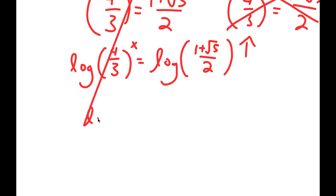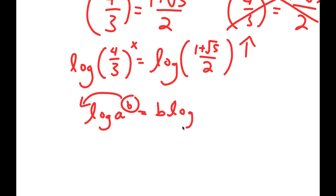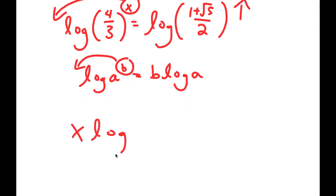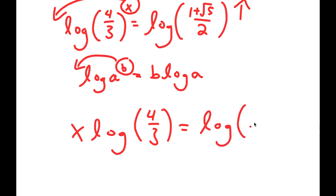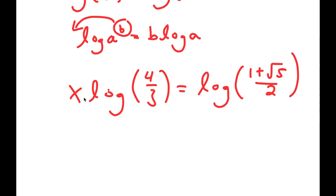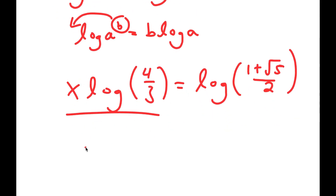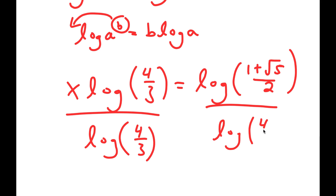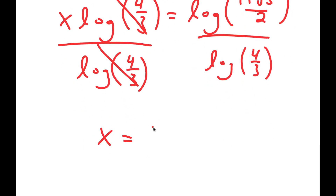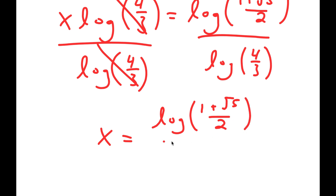Now if I have something in the form log of a to the power of b, I can move the exponent b to the front, so it equals b times log a. In this case I have log of 4 over 3 to the power of x, and I can move x to the front — so I get x times log of 4 over 3 is equal to log of 1 plus the square root of 5 over 2. Now that x is a term, I can isolate it by dividing both sides by log of 4 over 3, and I get x is equal to log of 1 plus the square root of 5 over 2, divided by log of 4 over 3.